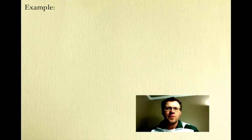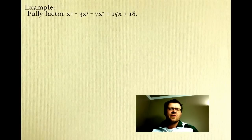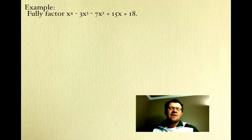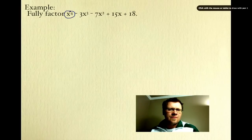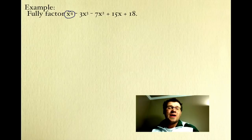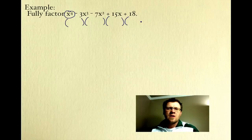Here's our big example for this lesson. It says: fully factor x to the fourth minus 3x cubed minus 7x squared plus 15x plus 18. That's all the information we have — they haven't given us any other factors to divide by. So we're going to have to find those factors ourselves. Because we have a degree of 4, our largest term is x to the fourth, which means we could have up to 4 factors, since each factor contributes one x.